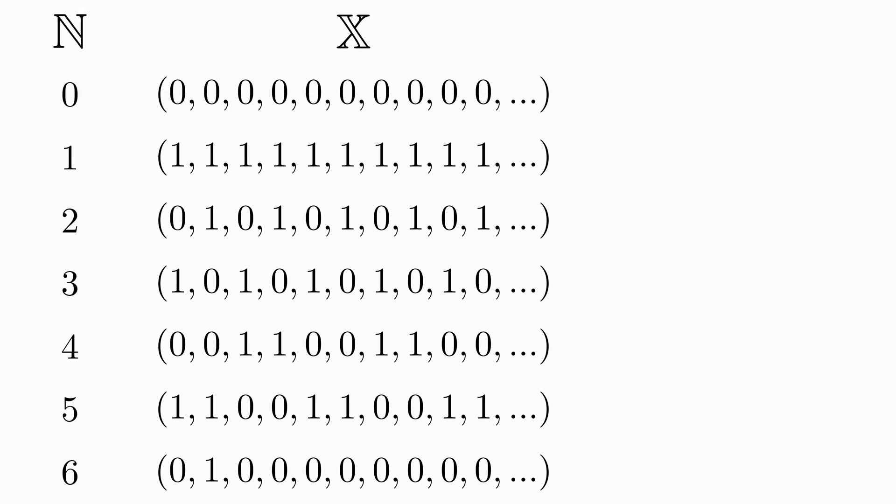And since they are both infinite, we must have written down all of the possibilities, right? The cardinality of both sets appears to be the same. But Cantor proved an astonishing result. It is impossible to have captured all of the binary sequences. You can write down a sequence of ones and zeros that is not in this list.